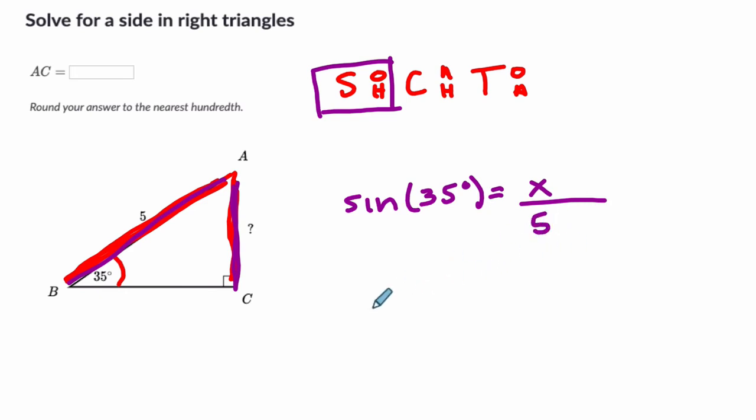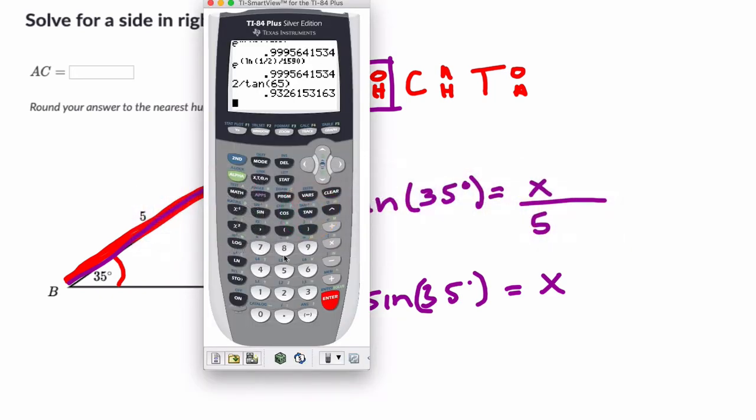How do I solve this? I multiply both sides by 5. 5 times the sine of 35 degrees is going to equal, well, X divided by 5 times 5. The 5s cancel out. They're opposite operations. And all I've got to do is 5 times the sine of 35. Boom. Hit enter.